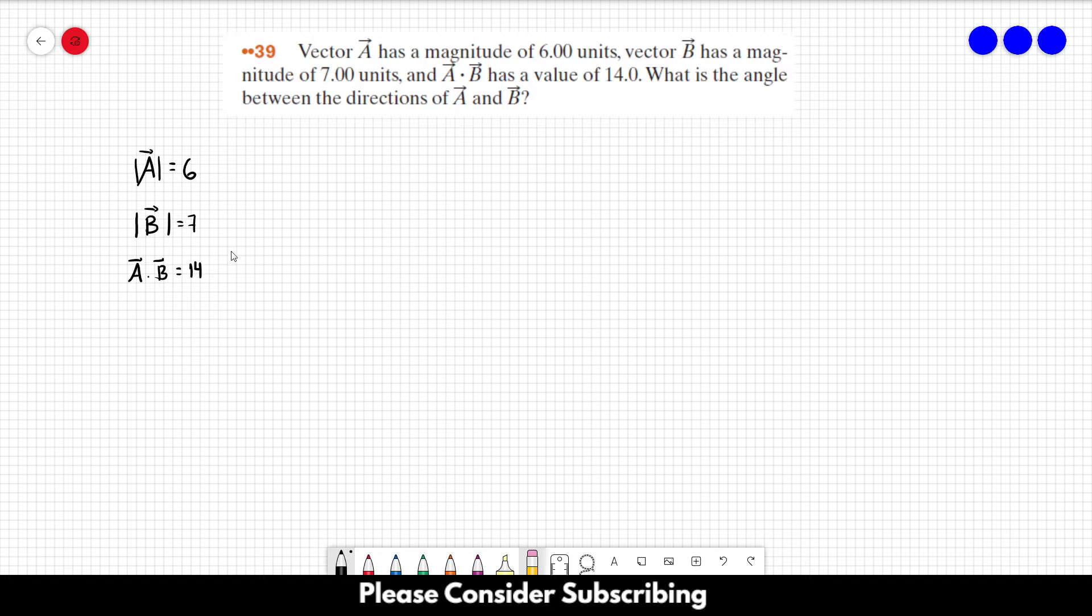So one of the properties of dot product is that when we do dot product, for example A dot B, this is equal to the magnitude of the first vector multiplied by the magnitude of the second vector times the cosine of the angle between them.